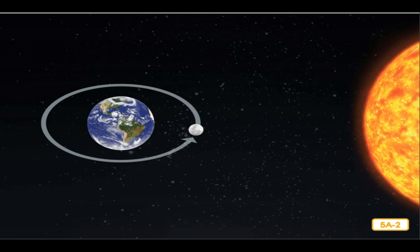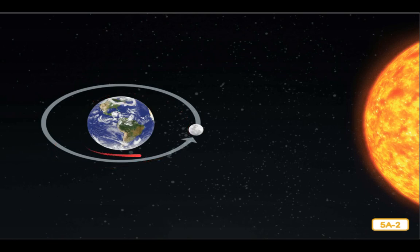Follow the arrows in this diagram and you can see that the moon orbits earth in a counterclockwise motion. The sun is on the right-hand side of this diagram. The moon moves counterclockwise — to the left.